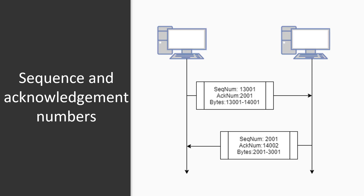The acknowledgement number is required since TCP provides full duplex services. The acknowledgement number is the next byte number that the receiver expects to receive, which also provides acknowledgement for the previous byte received. To be more clear, let's look at an example.